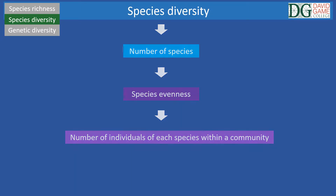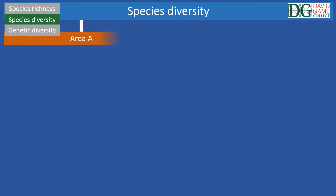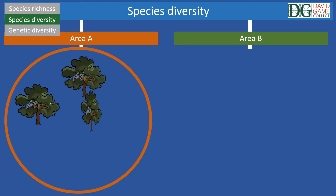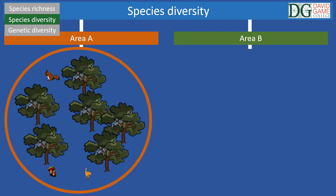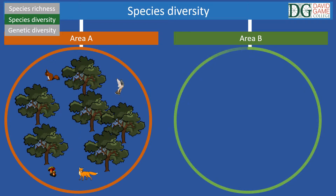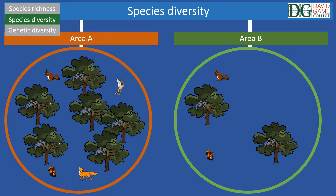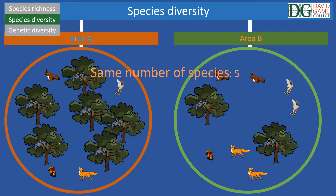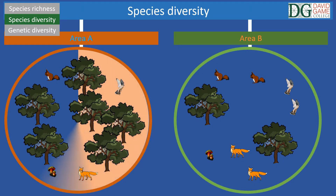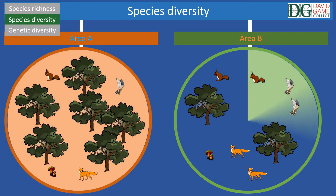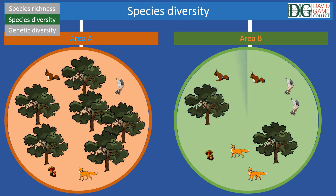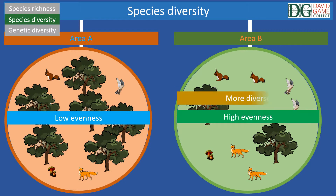For instance, let's imagine we have two areas: area A and area B. In area A there are six oak trees, two fungi, one squirrel, one fox, and one falcon, while in area B there are two oak trees, two fungi, two squirrels, two foxes, and two falcons. We can clearly see that area A and area B have the same number of different species — i.e. five. Furthermore, area A is dominated by oak trees, while area B shows higher species evenness and therefore can be considered more diverse.